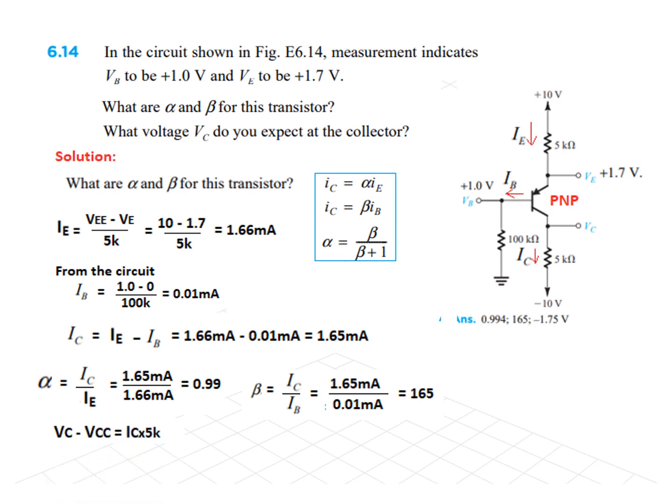And finally, VC from here, you can see VC minus this voltage will be the voltage drop here. So, you can say VC minus VCC. This is VCC. Is equal to the drop IC times RC. And from here, VC will be, we bring it on the right-hand side, VCC plus IC times 5k. Putting in the values, VC will be minus 1.75 volt.